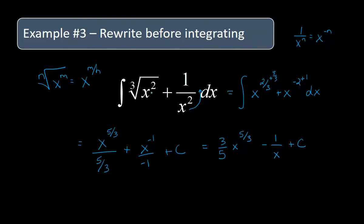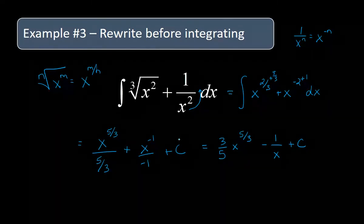So that one we had to rewrite so that we could use the power rule. It used some basic algebra properties to rewrite the radical, and then we had a power on the bottom to bring up — making it negative — and then we applied our power rule of integration: increase the power by one and divide by the new power.